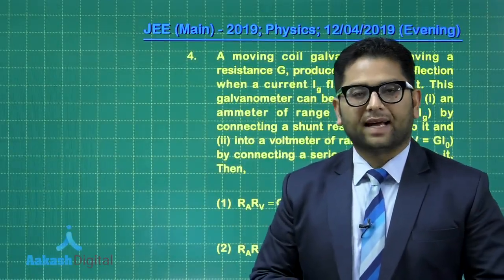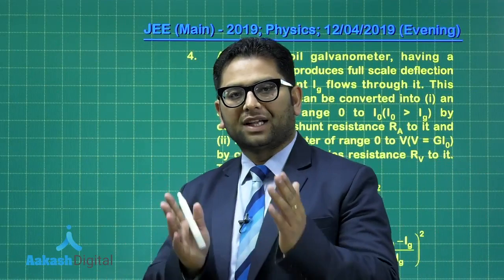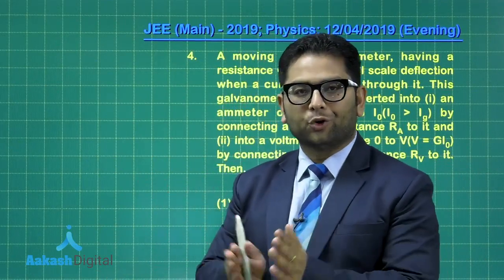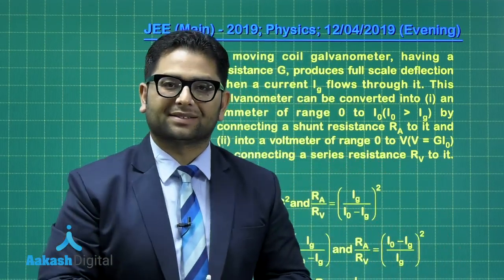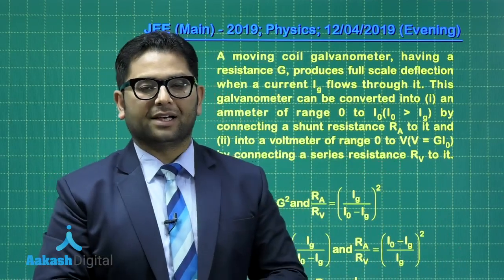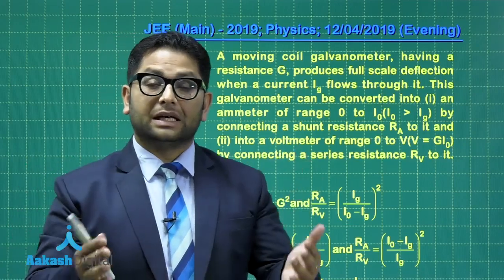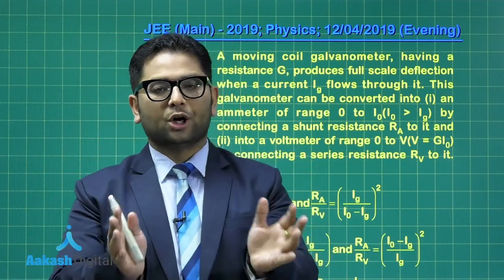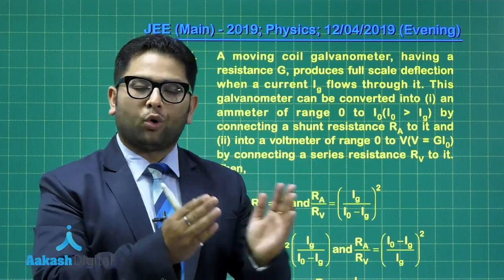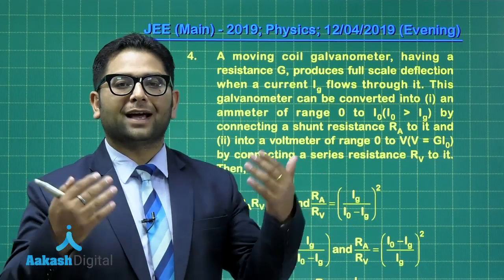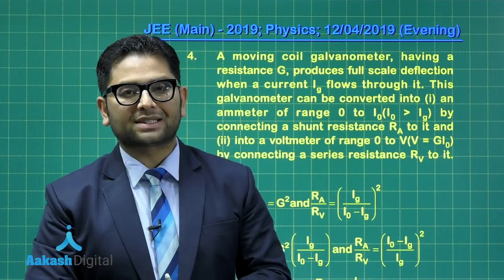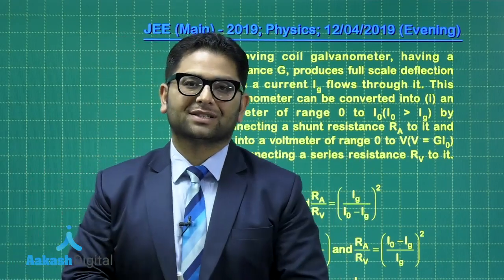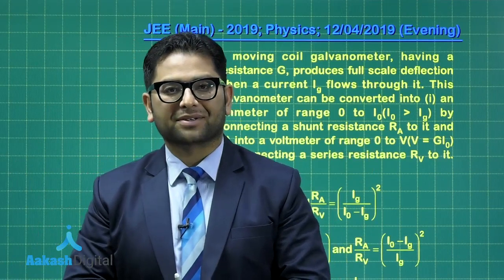Question number four has been derived from conversion of galvanometer into higher ammeter or voltmeter. So the question is specifically set from measurement and experiments. One thing you need to take care is while preparing for this examination, one has to lay special emphasis on those areas which are related to measurement or related to experiment. These topics have a very high degree of probability to occur in the examination. And if you try to go through the archives of the examination paper, you would see that there are plenty and plenty of questions related to experiments and measurement.